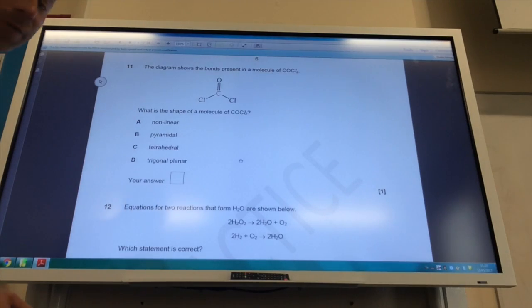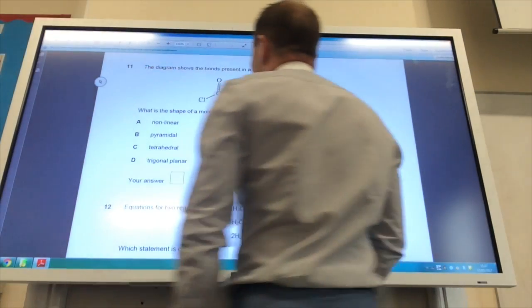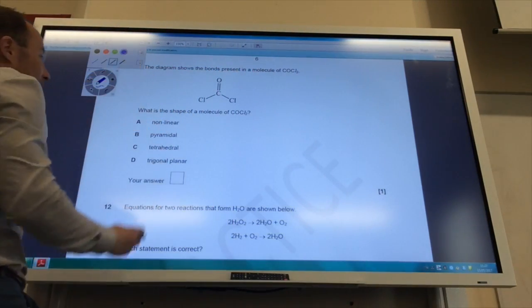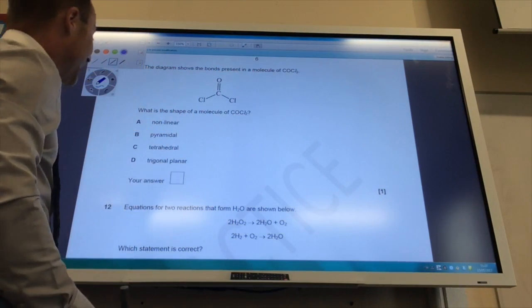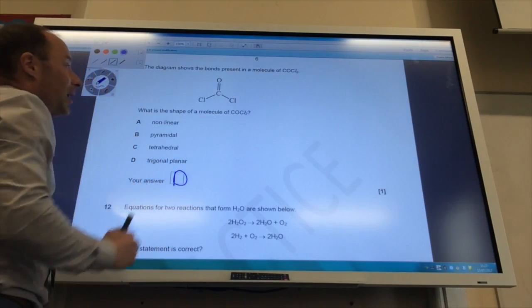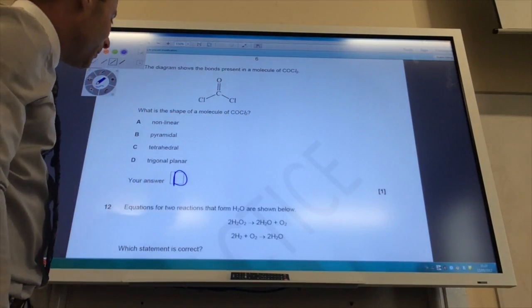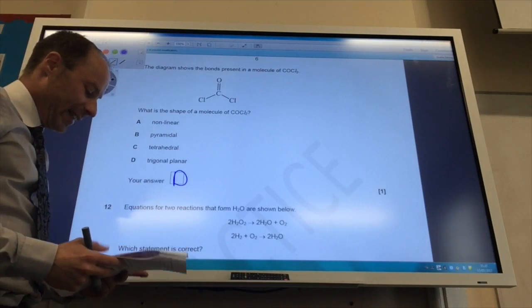Now for question 14. The diagram shows the bonds present in a molecule of COCl2. What's the shape? It's going to be trigonal planar. Carbon has three bonding pairs, no lone pairs, and therefore the answer is D.